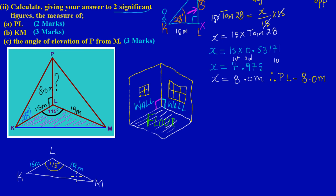To use the cosine rule, we first identify the sides using common lowercase letters. This angle is capital K, so the side opposite to it is lowercase k. This angle at L of 115 degrees — the side opposite to it, which is KM, is lowercase l. This angle is capital M, so the side opposite to it is lowercase m.